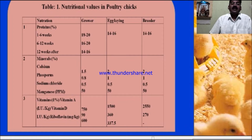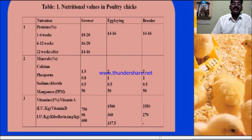For egg-laying chicks, the protein requirement applies from 1 to 6 weeks of age, and at 12 weeks it requires 14 to 16 percent protein for growers. At early stages, more protein is required; at the grower and broiler stages, protein requirement is comparatively less — nearly 2 to 3 percent less.